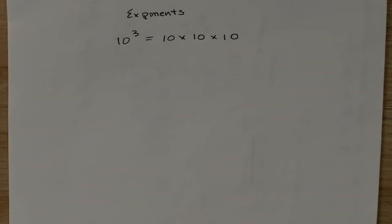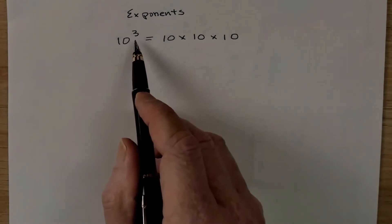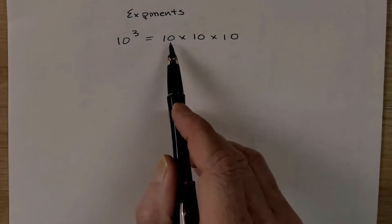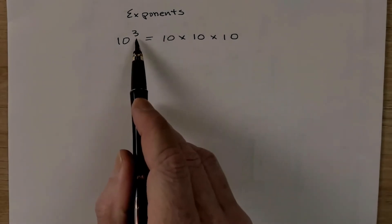Now the next thing that we should talk about is something called exponents. So you saw me use 10 to the power of 3 just a moment ago. And we talked about that equaling 10 times 10 times 10. 1, 2, 3. That's what this 3 means.